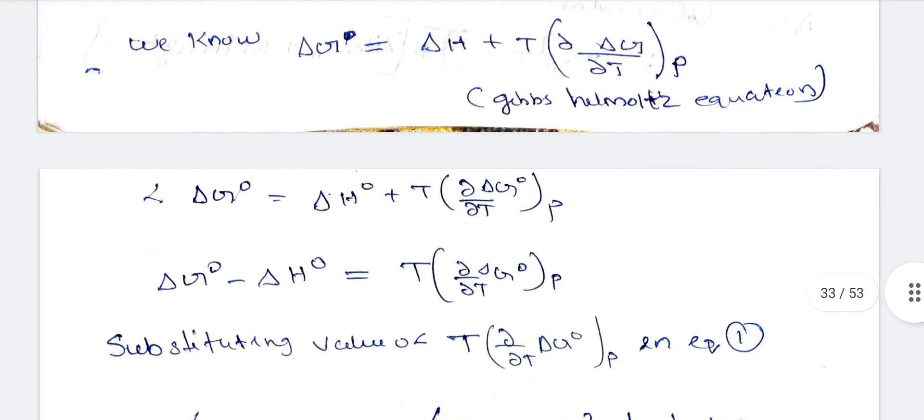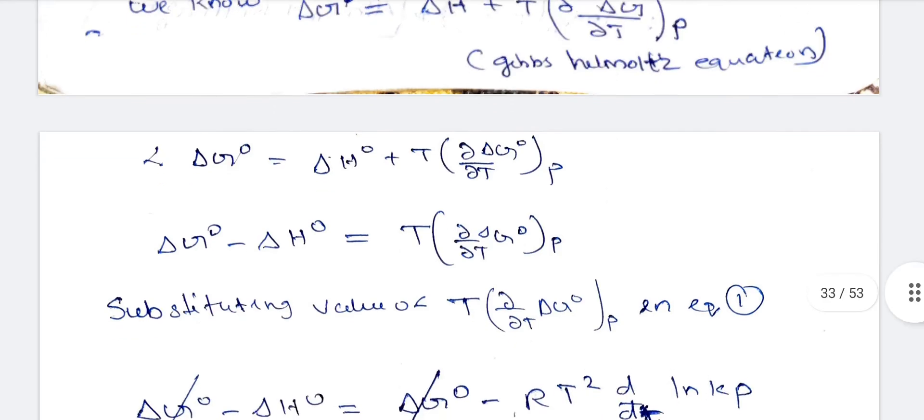This equation is the Gibbs-Helmholtz equation applied to standard state. We take the standard Gibbs energy, so delta G° = delta H° minus T times d(delta G°)/dT.